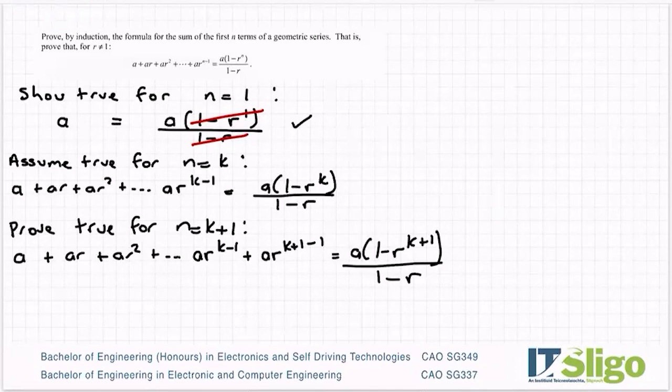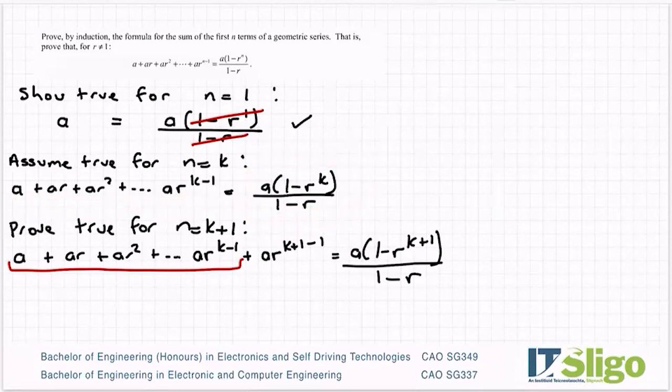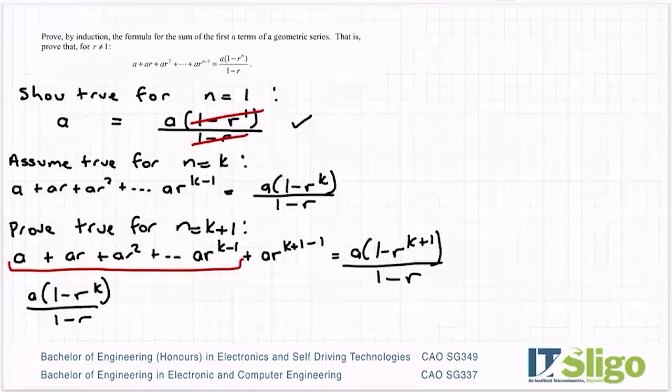Okay, so just like always, I'm going to sub in my assumption for the first part. So we're assuming that that part of the sequence sums to this. So on the left hand side, I'll have a times 1 minus r to the power of k over 1 minus r, add on my extra term. k plus 1 minus 1 would just be k, so ar to the power of k.